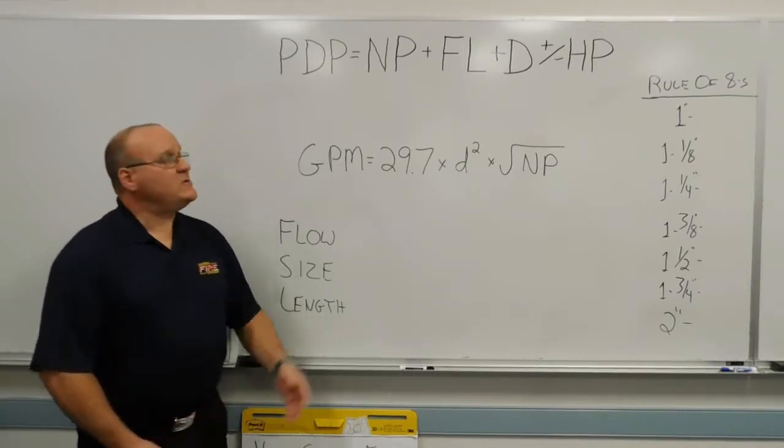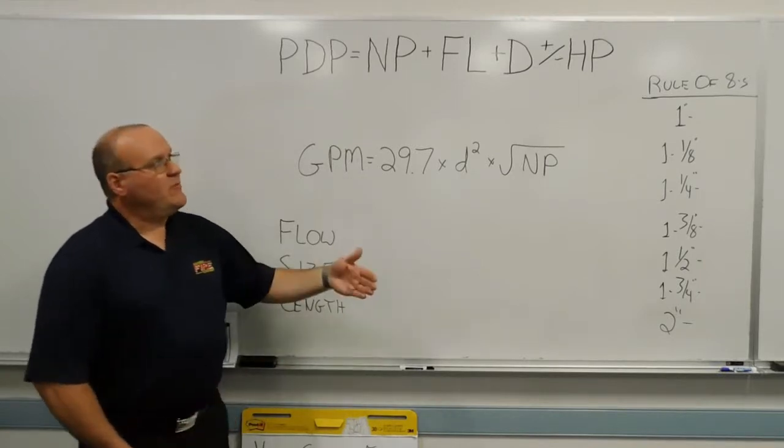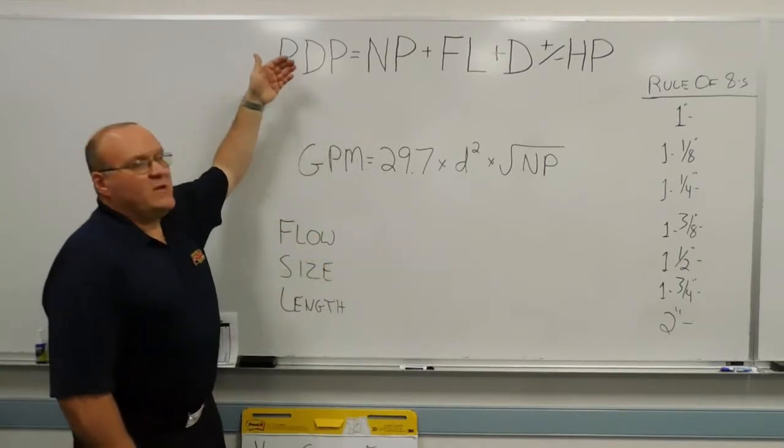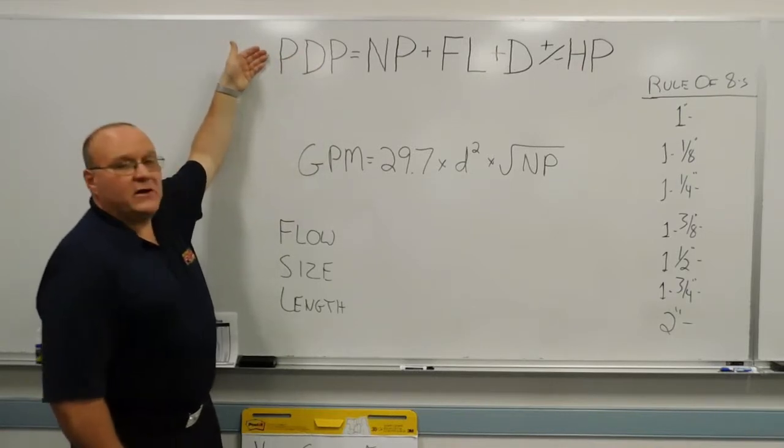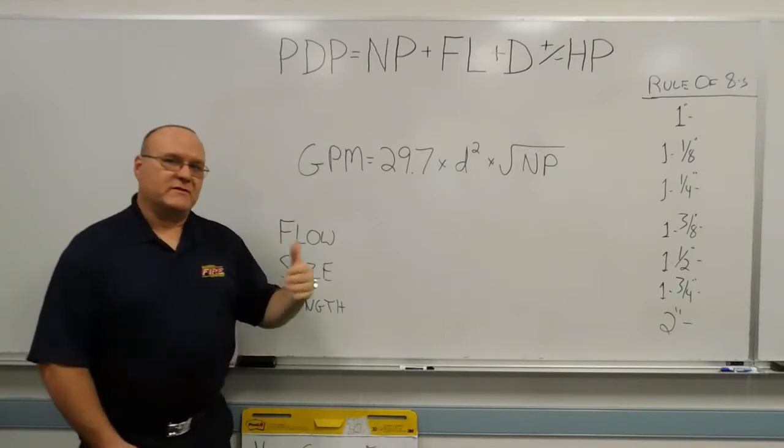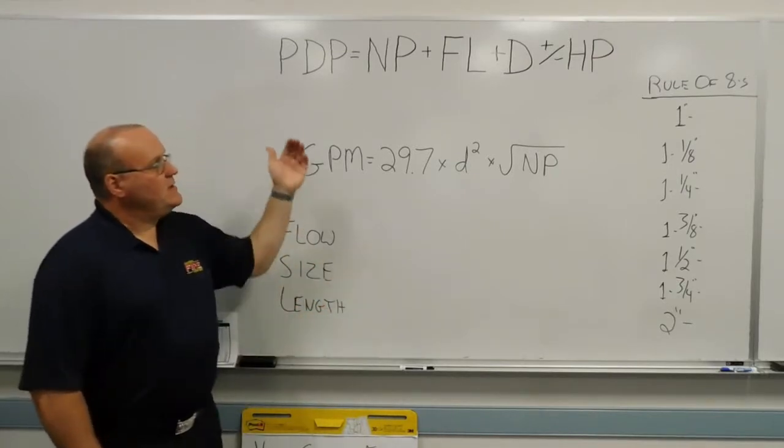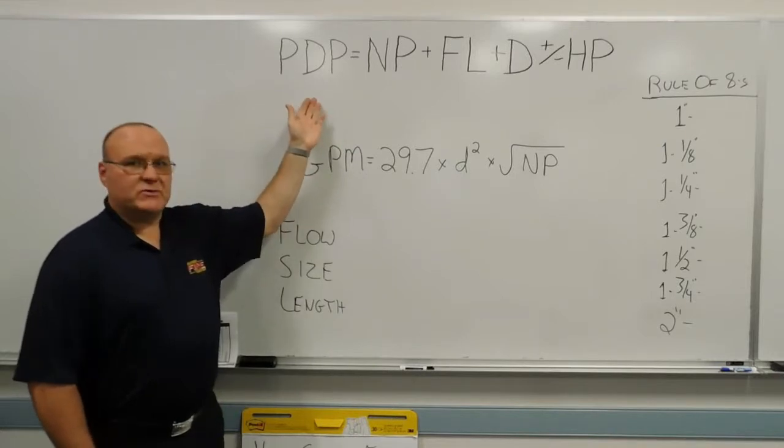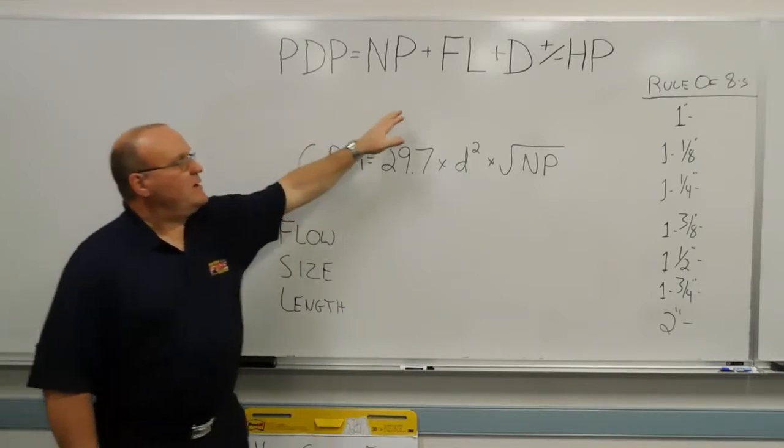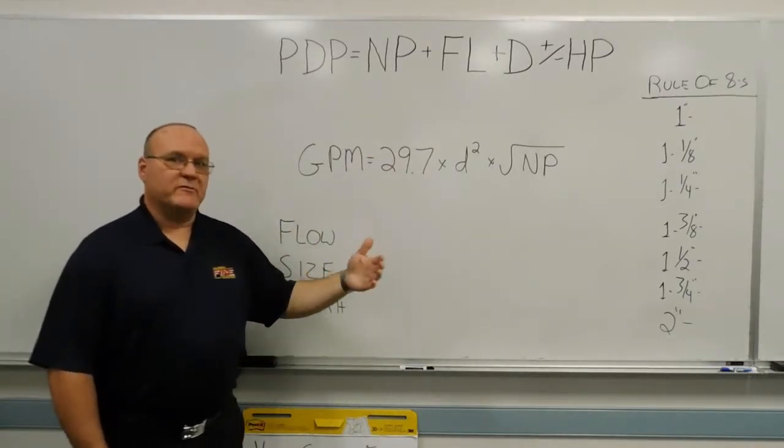We're continuing on with our hydraulic series of training minutes videos, building on what we've done before. In the previous training minutes videos, we discussed calculating our pump discharge pressure for any given situation, whether it was an attack engine, supply, or relay engine. And what we used in those examples, we calculated our friction loss for any given situation using a given gallon per minute flow.